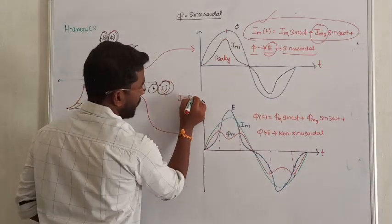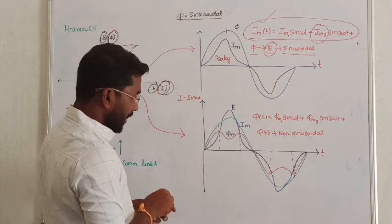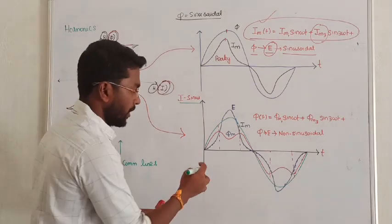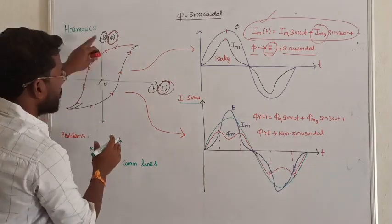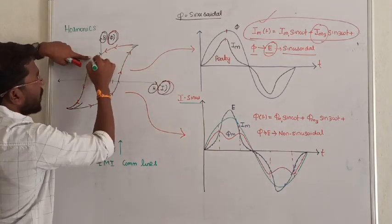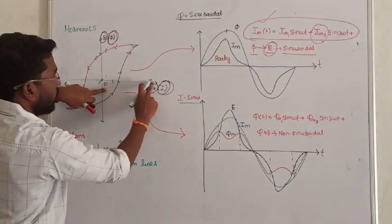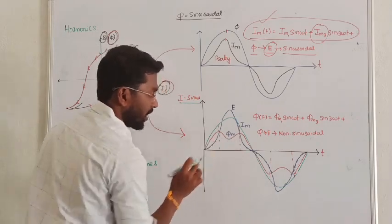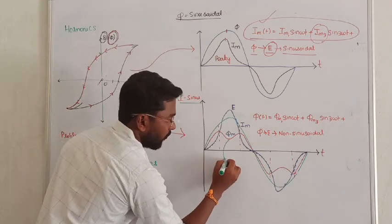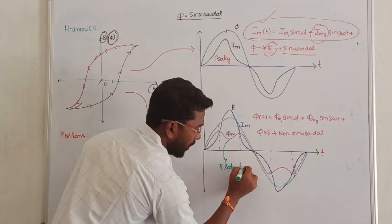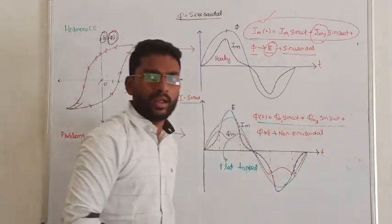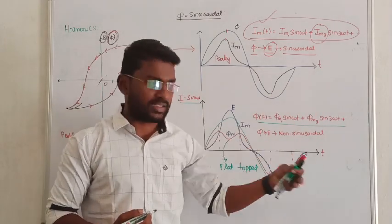Case number two: suppose the current is sinusoidal. The green color waveform indicates purely sinusoidal current. Using the same BH curve and mapping corresponding current values to flux values, you can plot the resulting flux waveform. The flux waveform turns out to be flat-top in nature — this is called a flat-top waveform. Once again, flux is greatly affected due to third harmonics. Higher order harmonics like fifth, seventh, and ninth are also present.